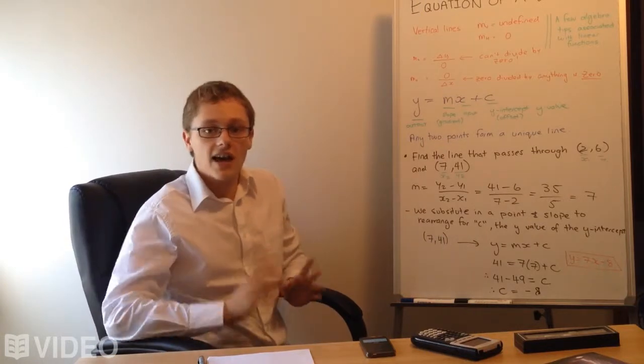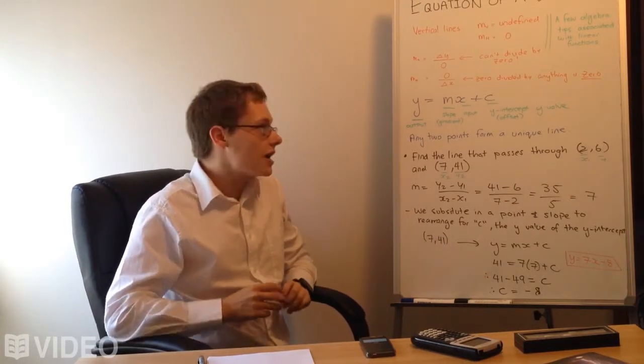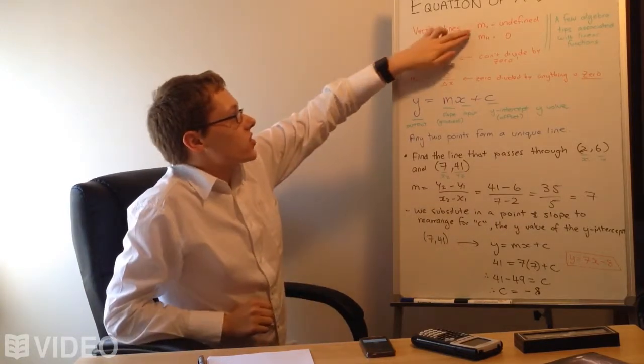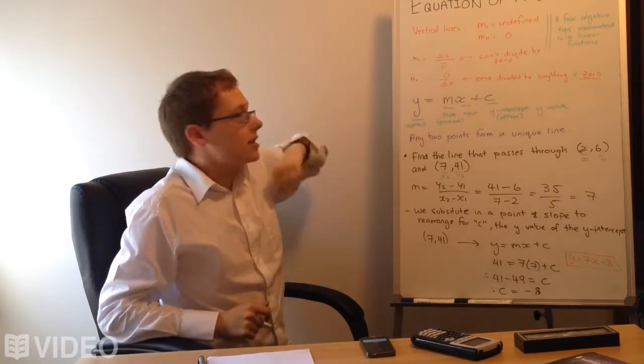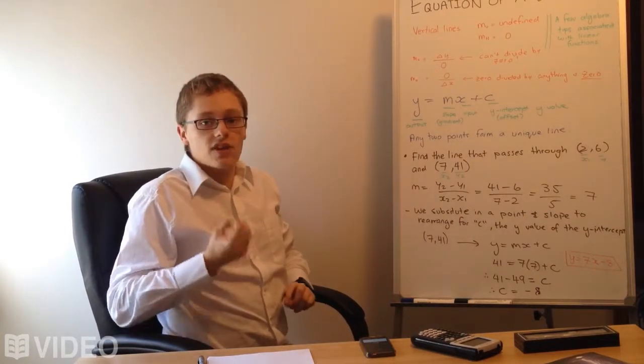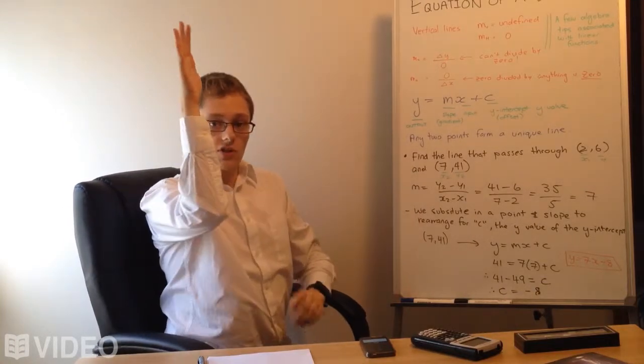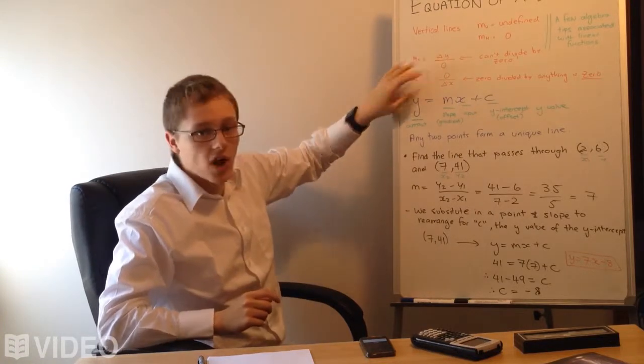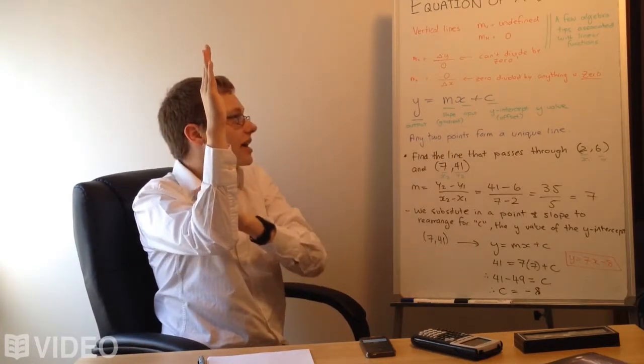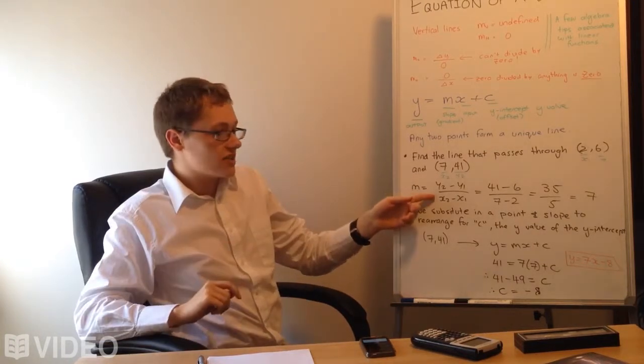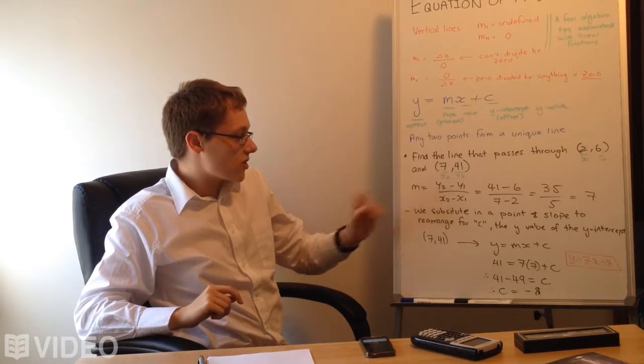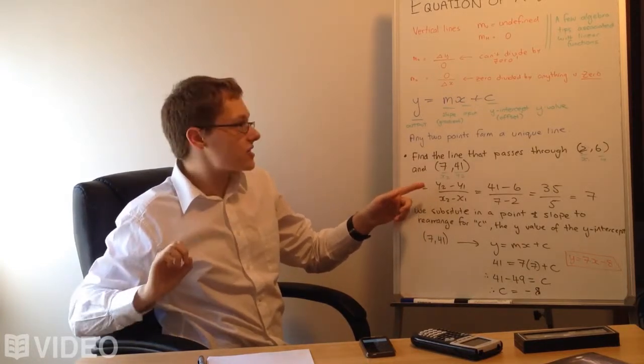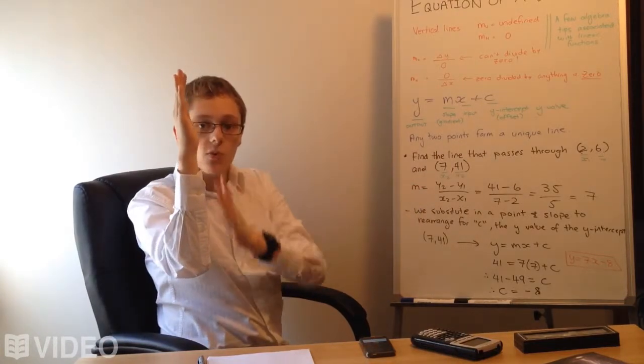Now just a few key algebra tips from our last episode. If you have a vertical line, a line that goes straight up, then its slope, which generally is just m as we learned in the last video, is undefined. The reason is because we have some change in y between two points on that vertical line and it's going to be divided by zero because there's no movement in the x direction. The slope equation is the change in y over the change in x, so if there's no change in x, we're dividing by zero.